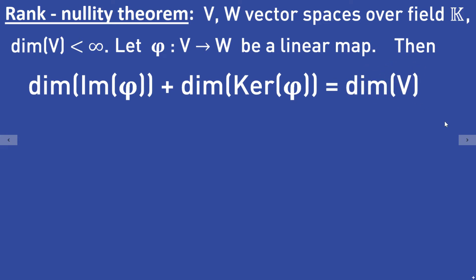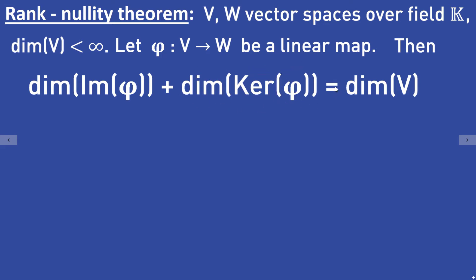So the theorem states that for a linear mapping phi from a vector space V to a vector space W, the dimension of the image of phi plus the dimension of the kernel of phi is equal to the dimension of V. That is what the rank-nullity theorem states.